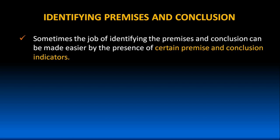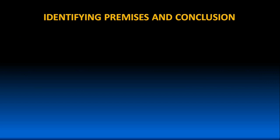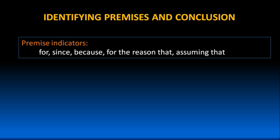Sometimes the job of identifying the premises and conclusion can be made easier by the presence of certain premise and conclusion indicators. But we usually have to rely on the context in order to determine which are the premises and the conclusion. The list of premise indicators include: for, since, because, for the reason that, assuming that. These are just a few keywords which help us to identify the premises.